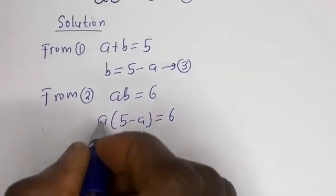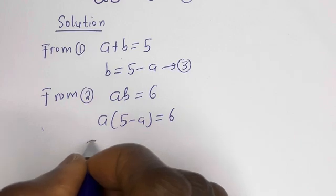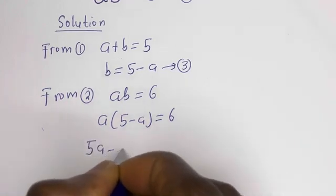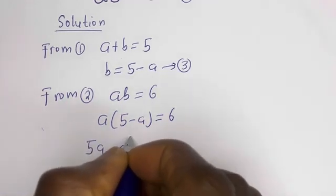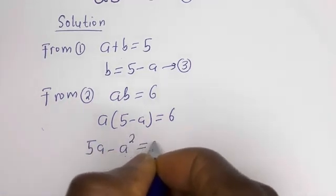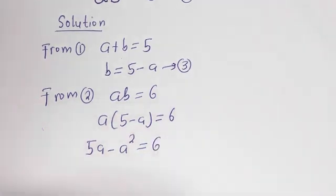Expanding, this gives 5a minus a squared is equal to 6.